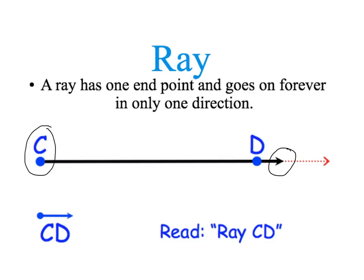We would read this as ray CD, and we would write it like this. The end point over the C, just like it is here, and the arrow over the D, just like it is here.